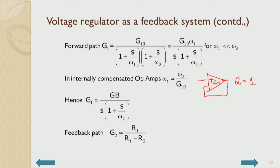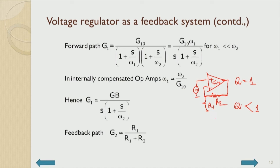When the attenuator R1/(R1+R2) is introduced in the feedback path, the DC loop gain gets multiplied by this factor, which is less than 1. So Q becomes less than 1 when the factor R1/(R1+R2) is introduced — the system slows down.